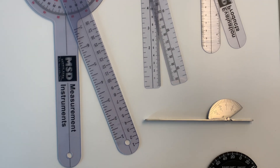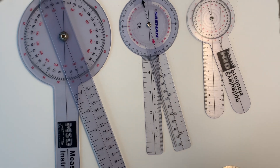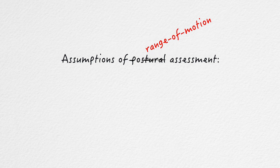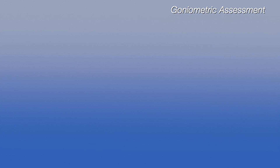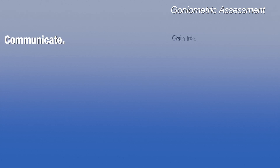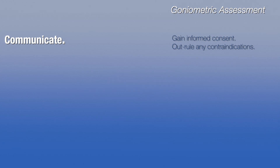Goniometers come in many shapes and sizes and you will get to use these during your practical class. To maximise validity and reliability, I will outline an assessment rubric that you can use when conducting a goniometric assessment. The following measures should be recorded and held consistent between assessments conducted by different examiners or by the same examiner conducting serial range of motion assessments. However, before we discuss the rubric, you must first communicate with your patient — outline the purpose of the assessment, why and how you are conducting it, and give them an opportunity to ask questions. Most importantly, you need to ensure there are no contraindications to assessment such as active inflammation, pain, instability or recent trauma such as a sporting injury.